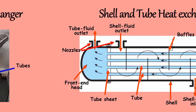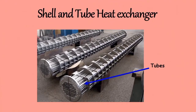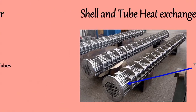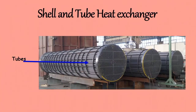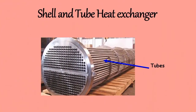The outside diameter of tubes varies from 6 mm to 40 mm. The tubes with outside diameters of 19 mm and 25 mm are very common. The tube lengths used are 0.5, 2.5, 3, 4, 5, and 6 meters. The wall thickness of tubes is usually expressed in terms of Birmingham Wire Gauge (BWG), and it depends upon the material of construction and diameter. For 19 or 25 mm outside diameter tubes of mild steel, 10 or 12 BWG is common.